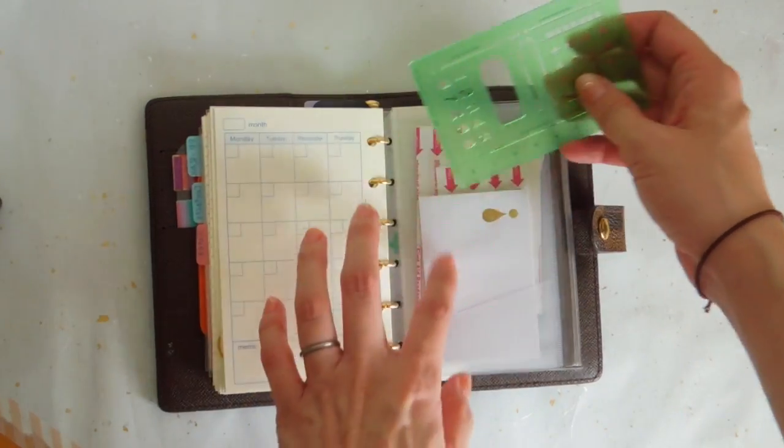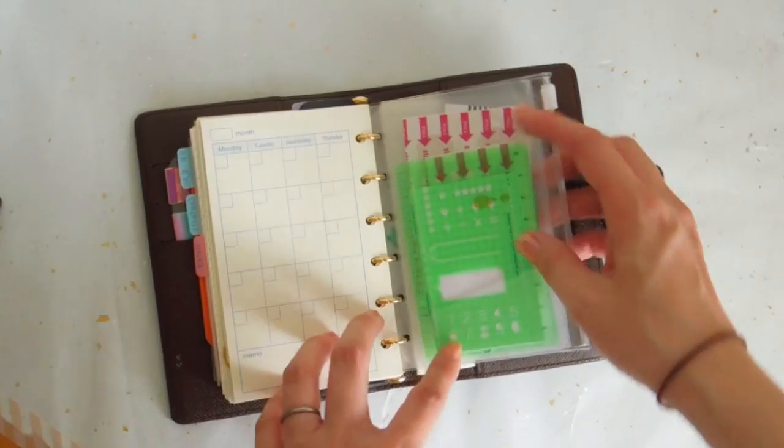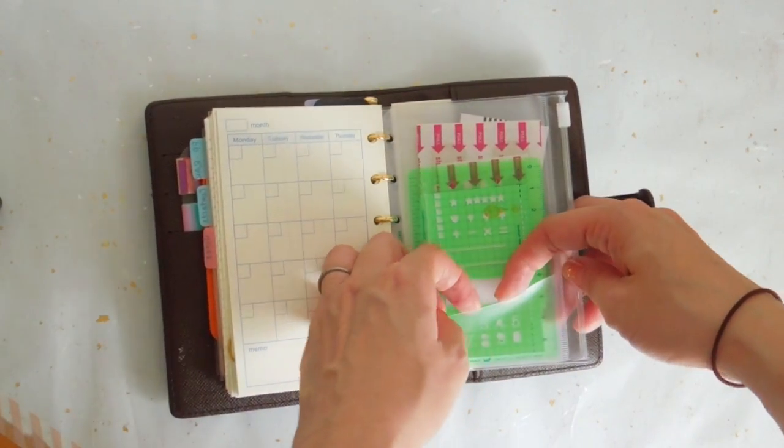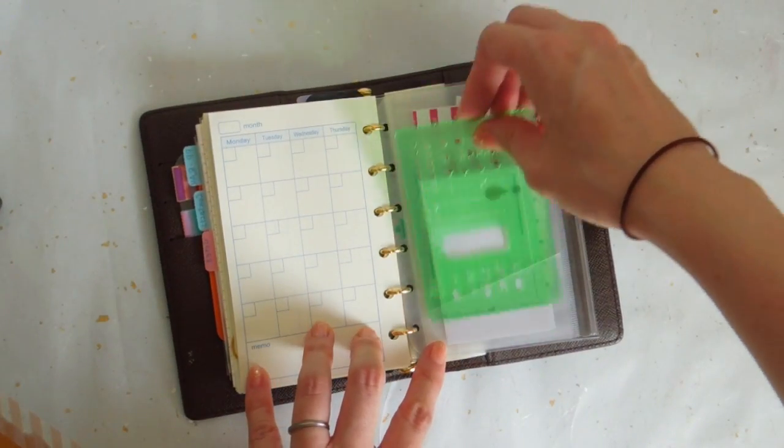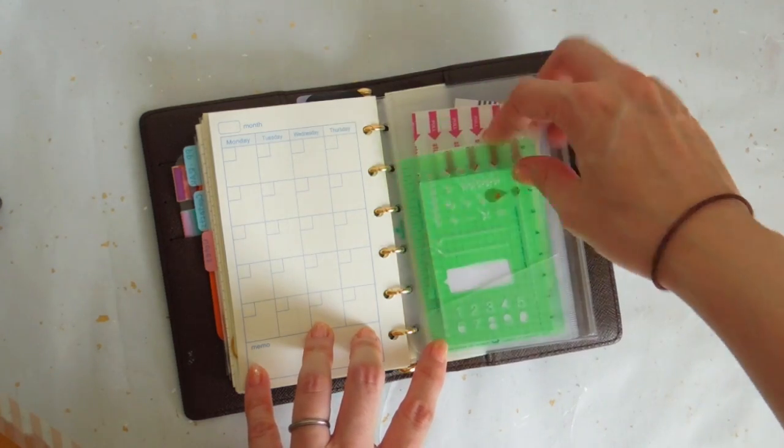Then I just have more post-it notes there. I like this Ashford one because it has a zip pouch and then it has a small little pocket right in the front there where you can slide really thin things like this stencil.